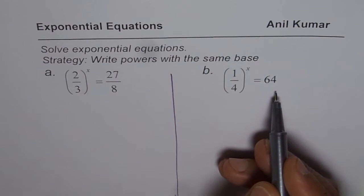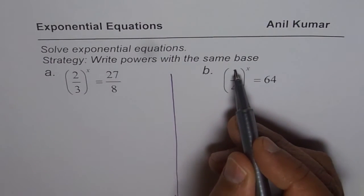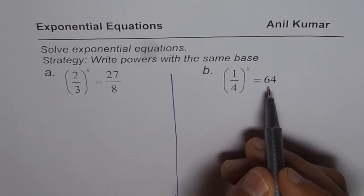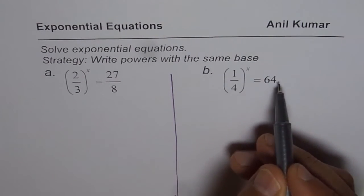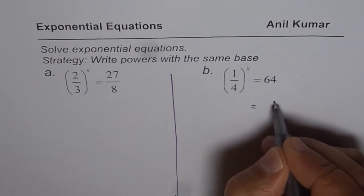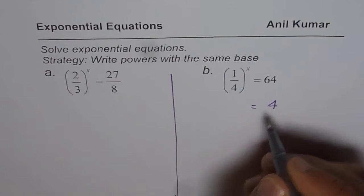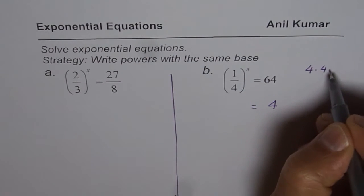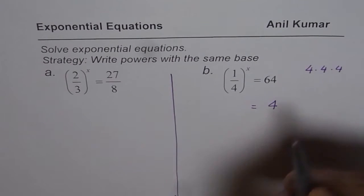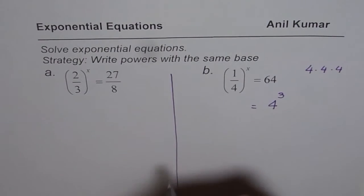Let us begin with the one on the right hand side. It is 1 over 4 to the power of x. That means I have to write 64 also with the base of 1 over 4. What we know here is 4 to the power of, 4 times 4 is 16 and 16 times 4 is 64. So 4 cube is 64, right?